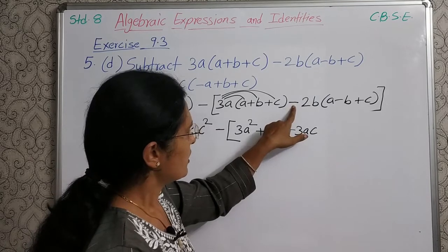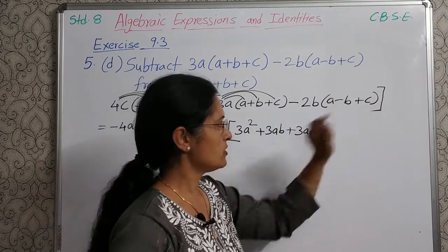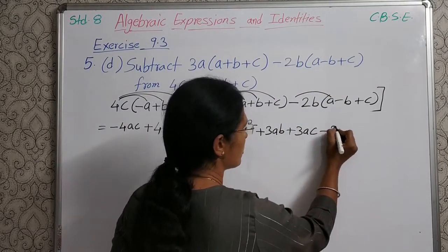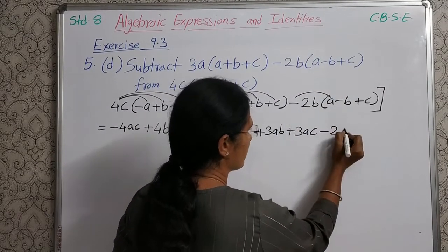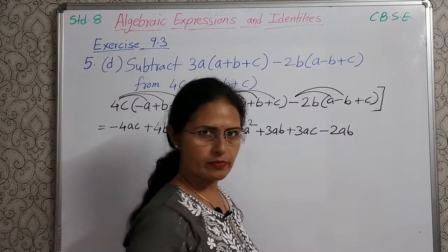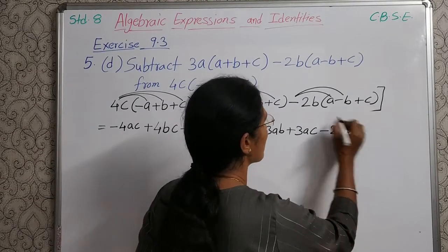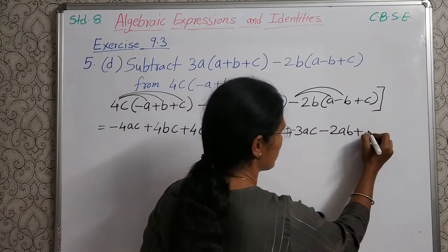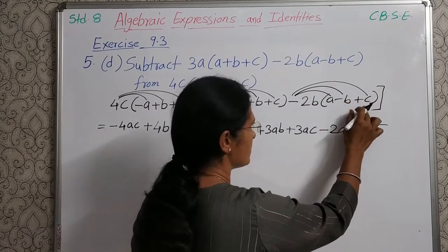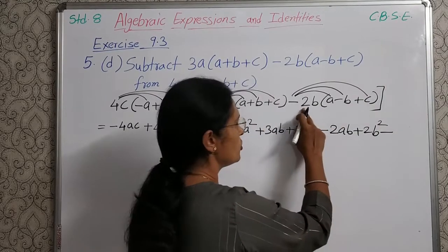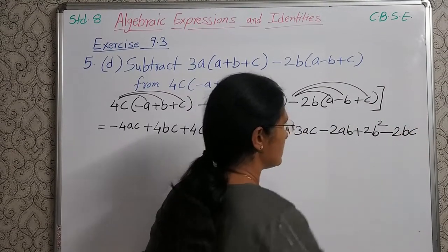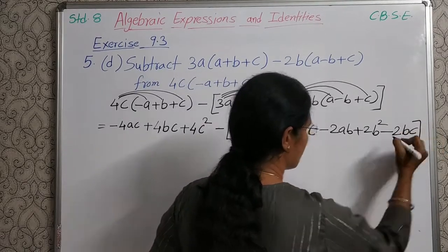Now multiply minus 2B with each of these three terms. So minus 2B into A is minus 2AB. Next, minus 2B into minus B — minus minus — plus 2B square. Then, minus 2B into plus C — minus plus — minus 2BC. And here close the square bracket.